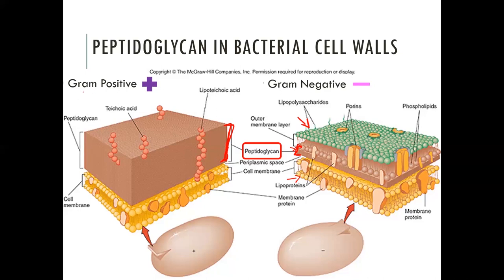These names come from gram staining, which uses the chemical crystal violet to detect the two types of bacteria. Crystal violet binds to peptidoglycan and turns purple in its presence. Gram-positive bacteria will look more purple because they have a lot of peptidoglycan for the crystal violet to bind to, with nothing blocking it. In gram-negative bacteria, the extra outer membrane slows down staining, and the thin peptidoglycan layer gives the crystal violet little to attach to — so it won't look nearly as purple.